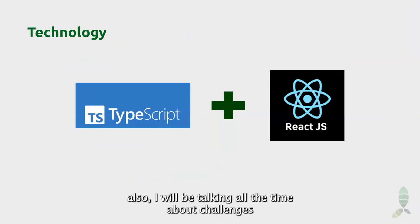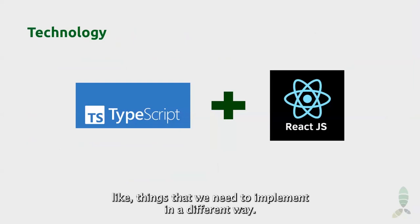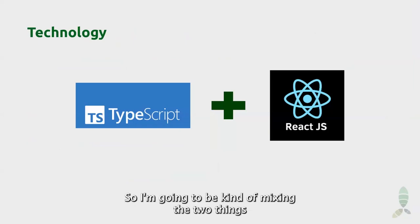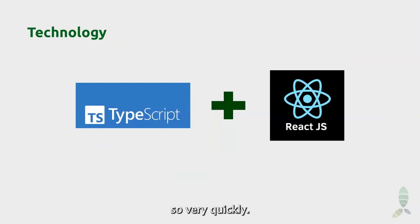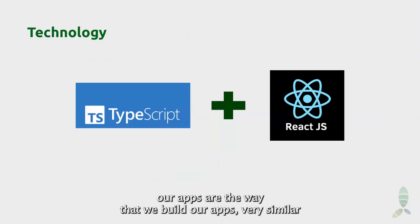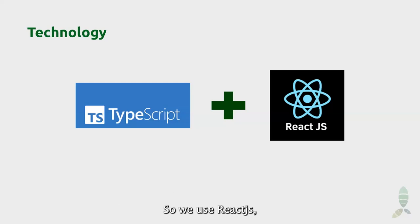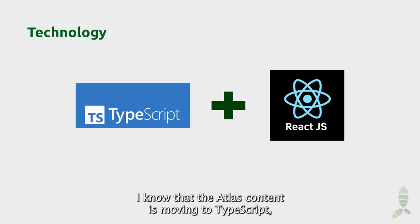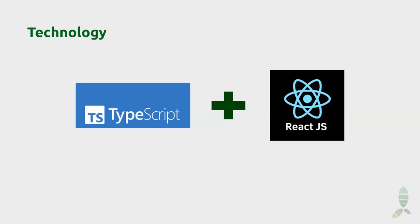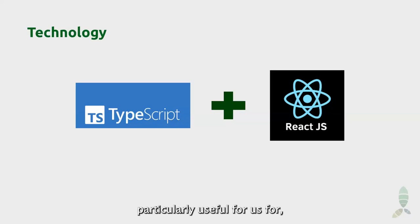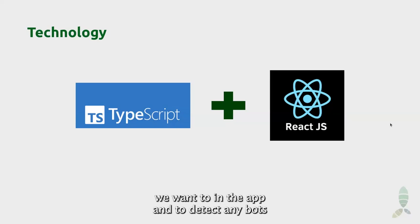The way we build our apps is very similar to the way the DHIS core team builds the core apps. We use ReactJS and TypeScript. The DHIS core team is moving to TypeScript now, and we have been using TypeScript for many years because it facilitates the way we maintain the app and detect any bugs — TypeScript is a critical point for us. We use the typical framework: Vite for the app, Vitest for testing, Playwright for unit and end-to-end tests, and we use a lot of GitHub and GitHub Actions.